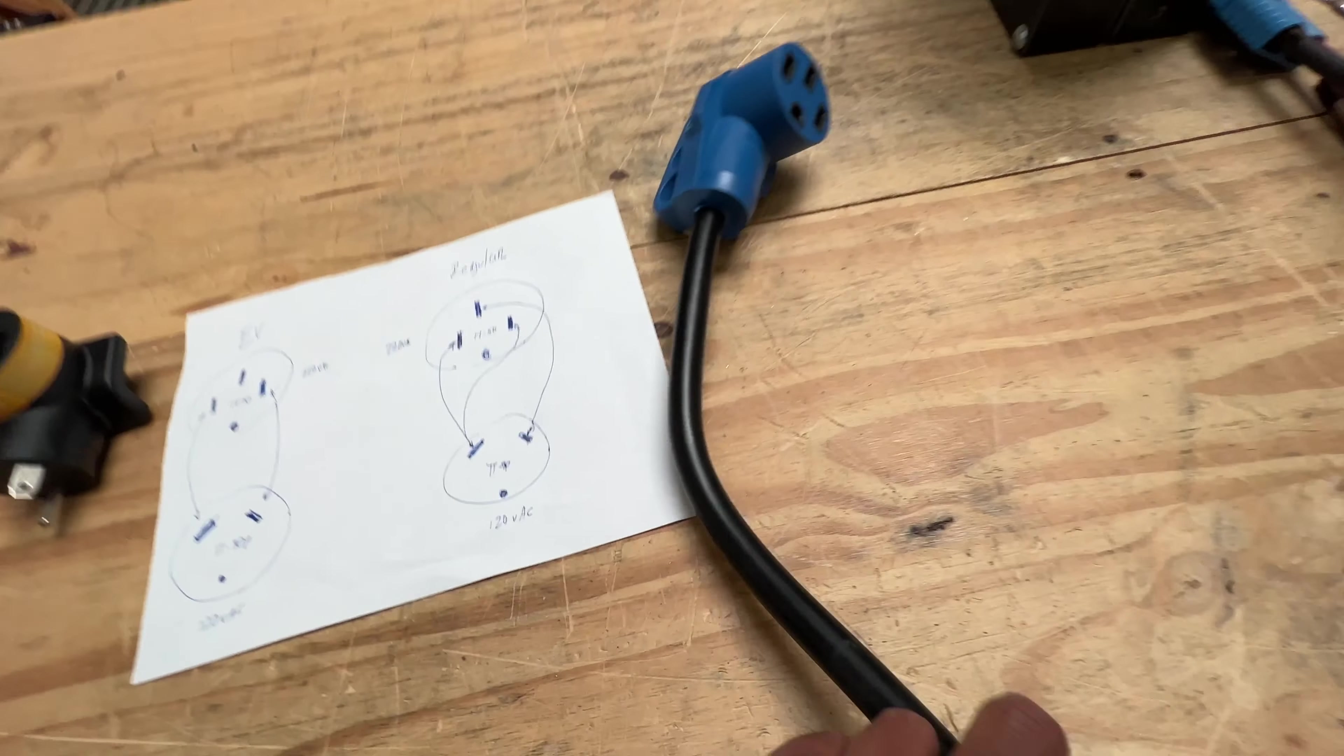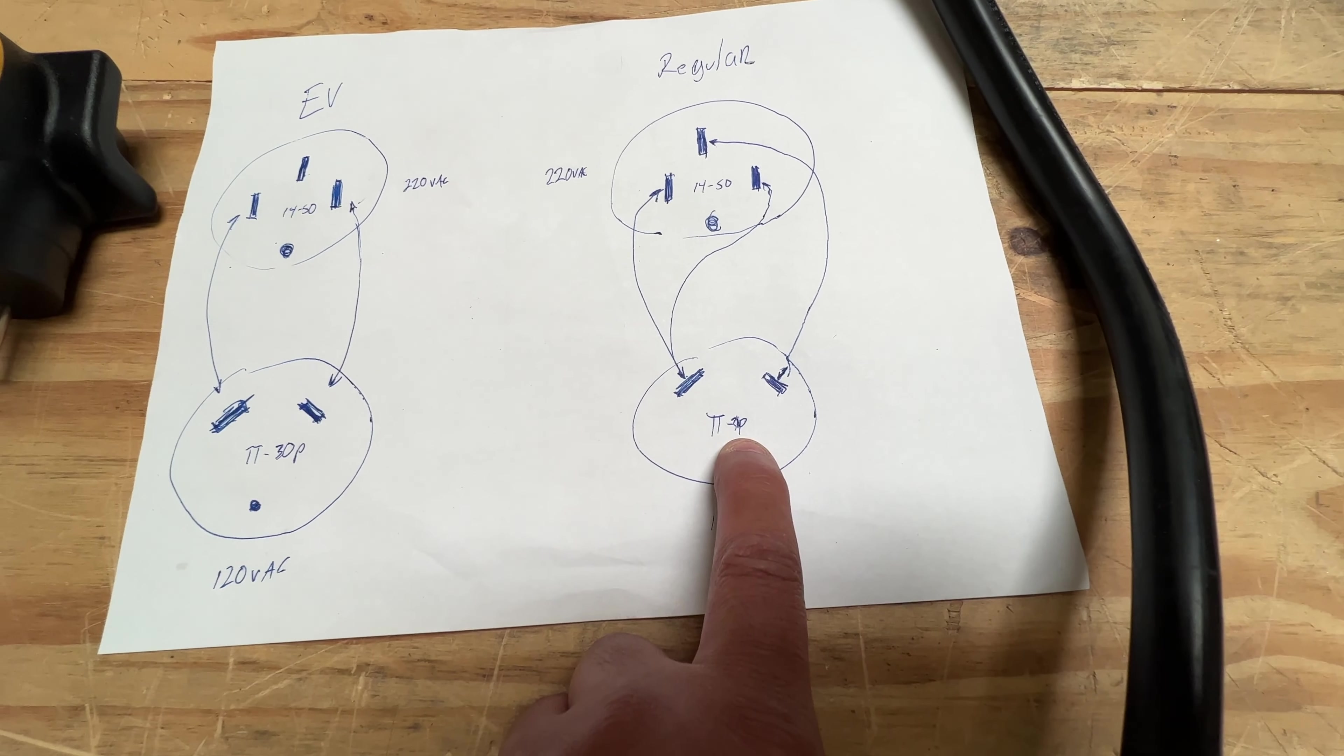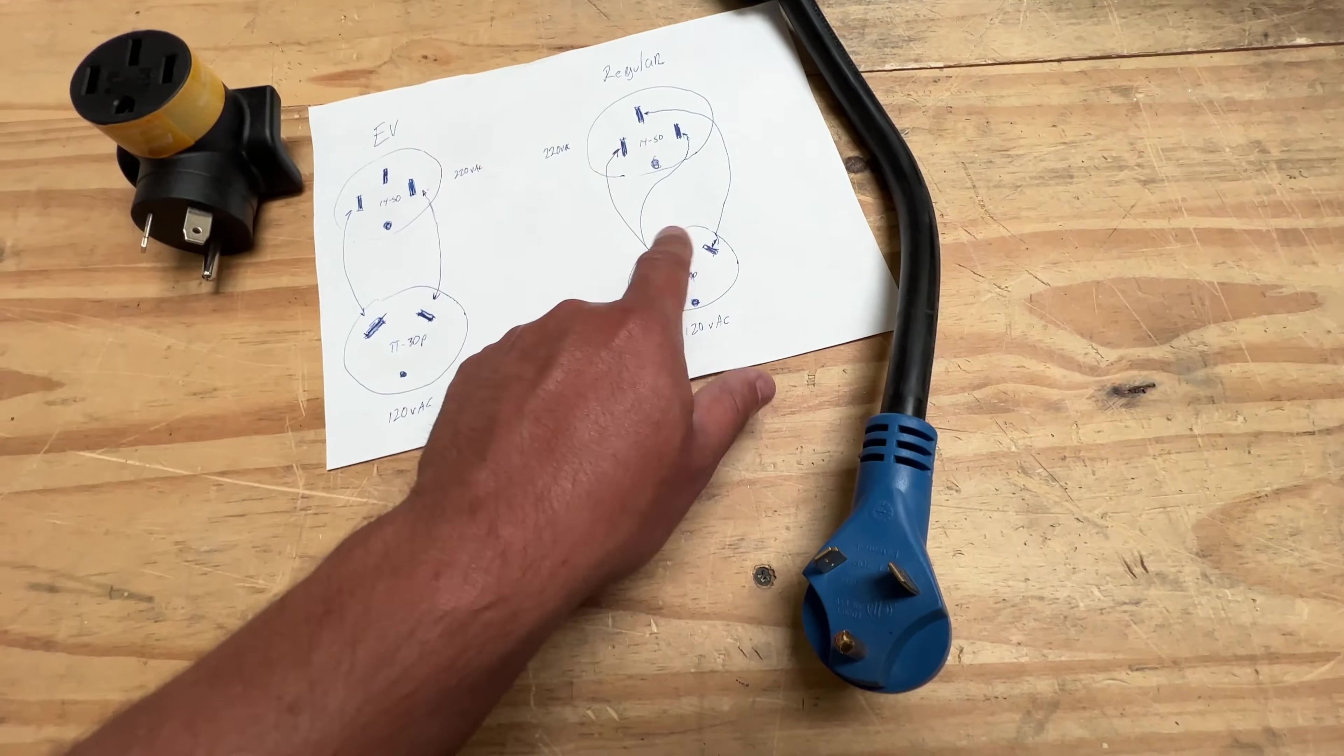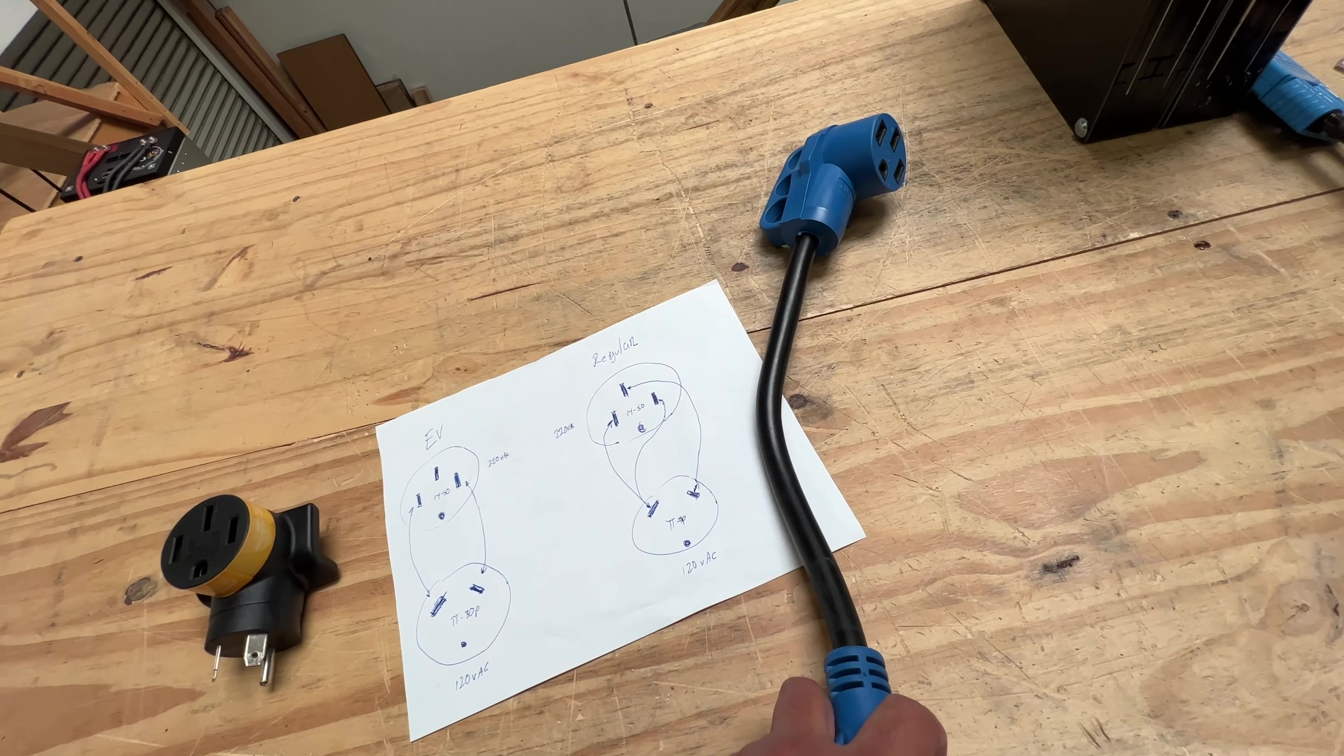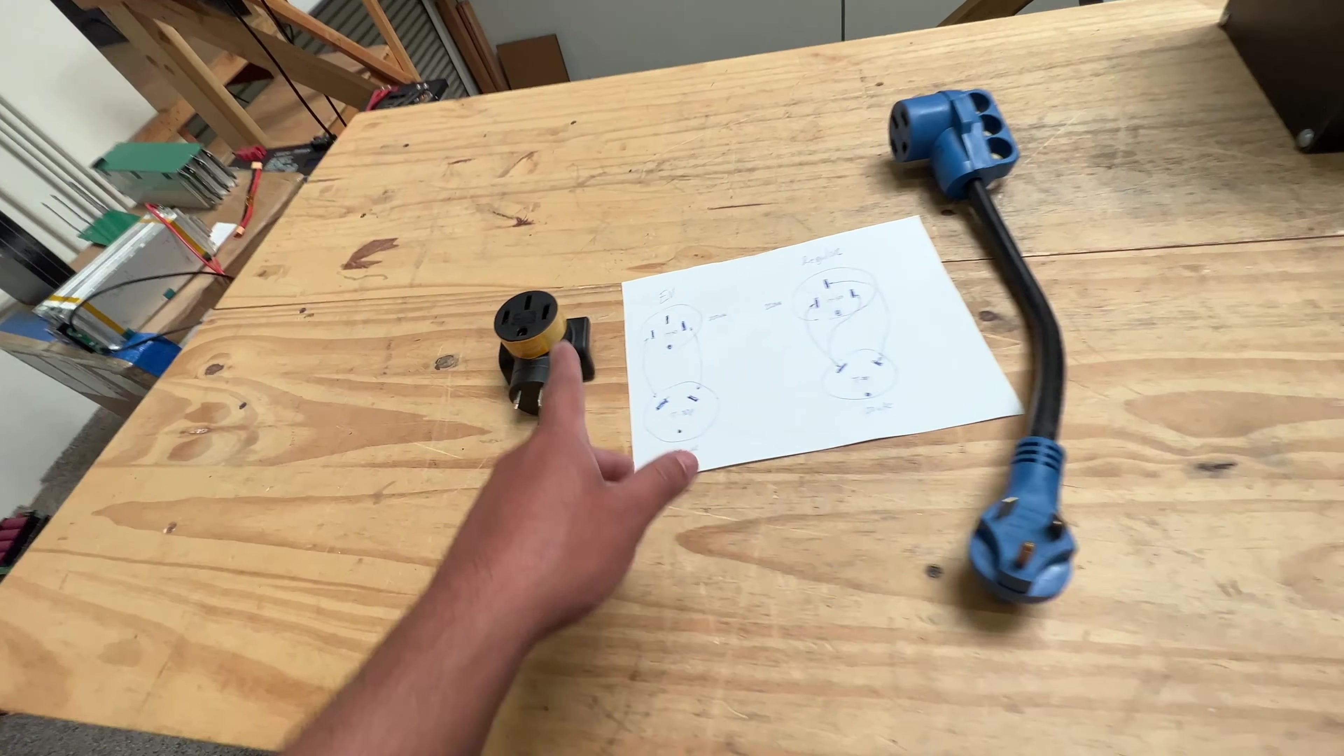If you're trying to charge a car off a TT-30P connector that you have in someone's home, a generator, or some other device that has this connector, and you want to charge a car, then you have to use this one. But if you just want to power an RV or any other thing that has 120 circuits, then this is the connector you need. They are not interchangeable.